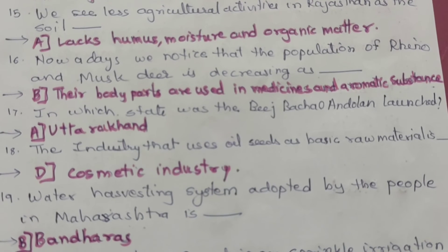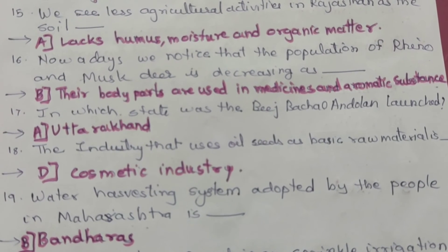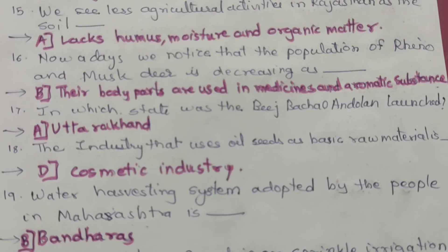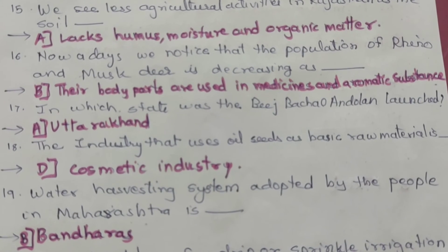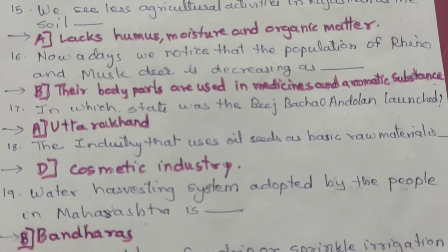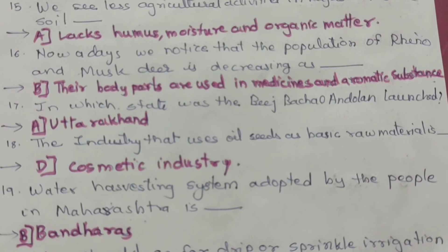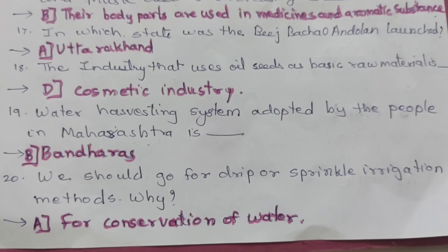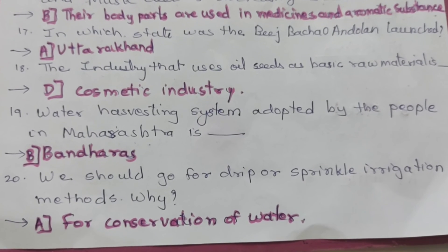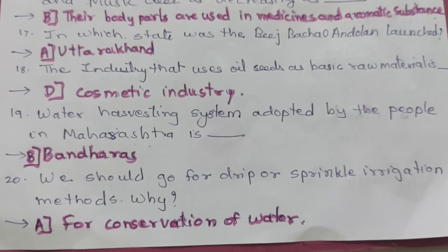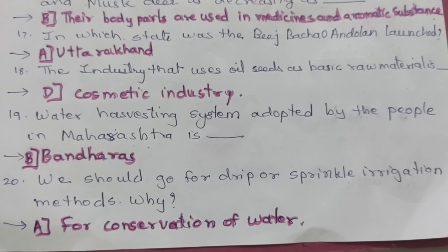The correct option for Question 18 is D — cosmetic industries. Question 19: The water harvesting system adopted by the people in Maharashtra is option B — bandaras. Question 20: We should go for drip or sprinkle irrigation method — why?